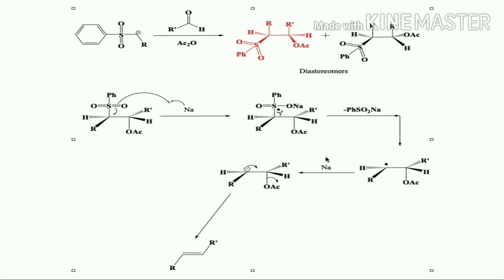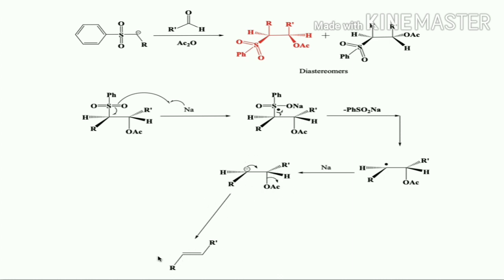Both diastereomers react via the same free radical mechanism. E-alkene is formed because the substituents adopt an arrangement that minimizes steric repulsion. In the diastereomer where the two groups are on the same side, C–C bond rotation occurs to reach the more stable arrangement, and elimination of the acetate group then leads to E-alkene formation.